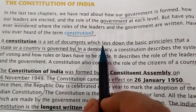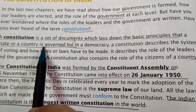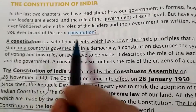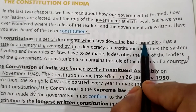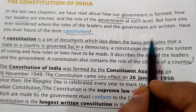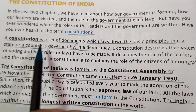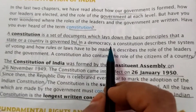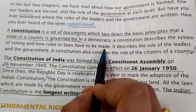A constitution is a set of documents which lay down the basic principles that a state or a country is governed by. It is essentially a book where the rules and regulations of a country or state are written — how that particular country or state will be governed and organized.